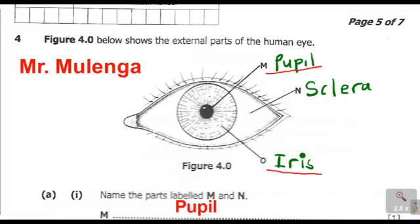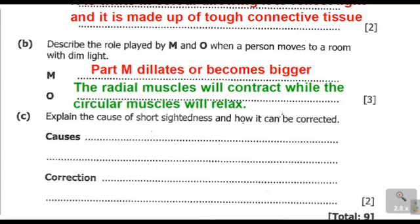Then what will happen to the iris? The iris has radial muscles and circular muscles. When we move into a room with dim light — with low light intensity — the radial muscles are going to contract while the circular muscles are going to relax, meaning that these muscles work antagonistically. Part M, the pupil, dilates or becomes bigger to allow more light to enter. Part O, the iris: the radial muscles contract while the circular muscles relax.